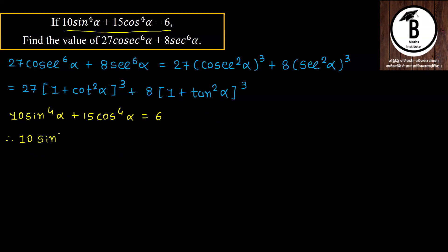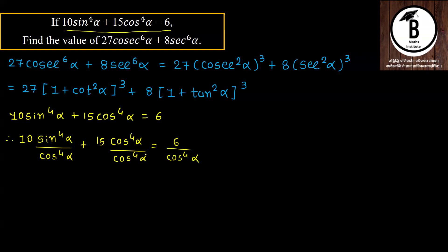सभी को cos⁴α से divide करने पर: sin⁴α/cos⁴α + 15·cos⁴α/cos⁴α = 6/cos⁴α। sin/cos = tan होता है, मतलब 10·tan⁴α + 15 = 6·sec⁴α।